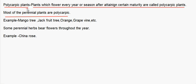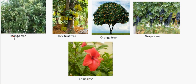Polycarpic plants are plants which flower every year or season after attaining a certain maturity. Most perennial plants are polycarpic. Examples include the mango tree, jackfruit tree, orange, grapevine, etc. Some perennial herbs bear flowers throughout the year, for example china rose. Here you can see the mango tree, jackfruit tree, orange tree, grapevine, and the china rose herb, which all live for many years.